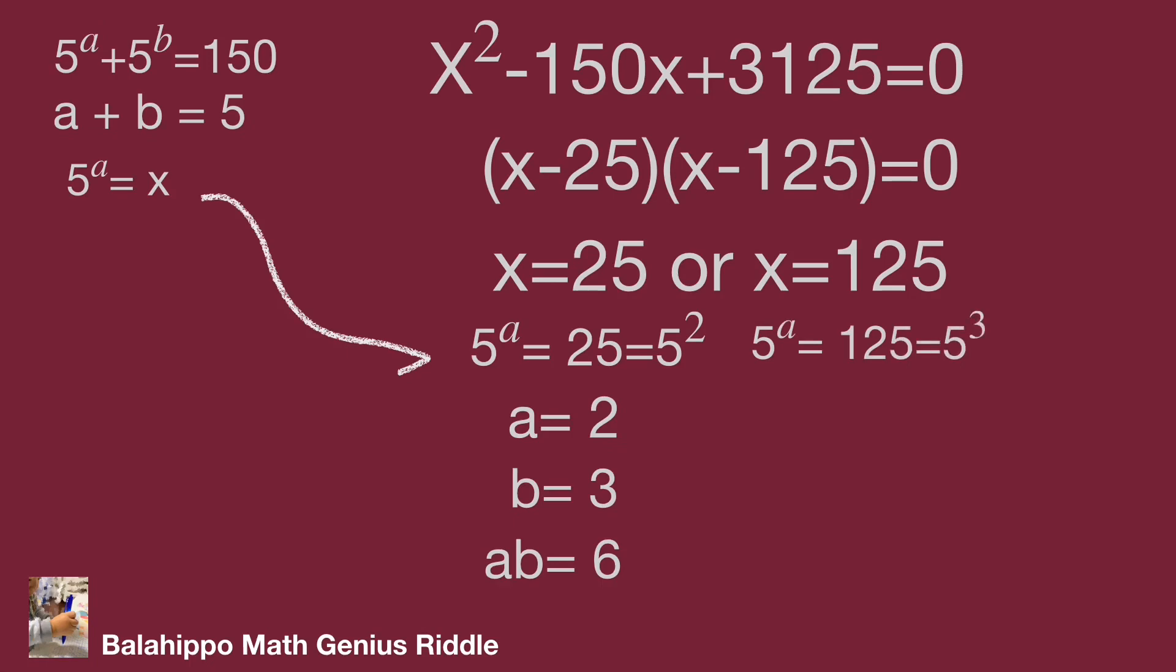Also, 5 power of a equal to 125 equal to 5 cubed, so a equals 3, b equals 2, and a multiply b equal to 6.